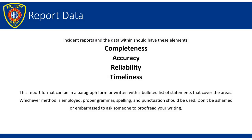Every NIFRS incident report must contain the following elements: completeness, accuracy, reliability, and timeliness. The report format can either be written in paragraph form or a bullet list of statements. Whatever method is employed, make sure you use proper grammar, spelling, and punctuation. Also, don't be afraid or embarrassed to ask someone to proofread your report.